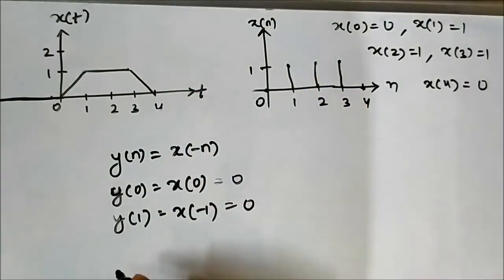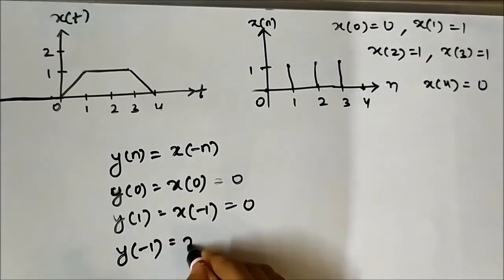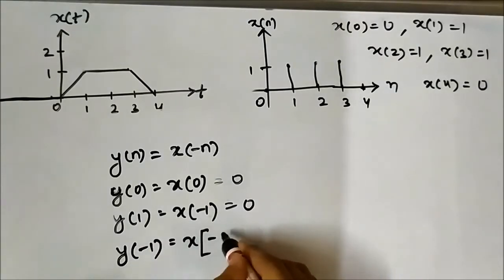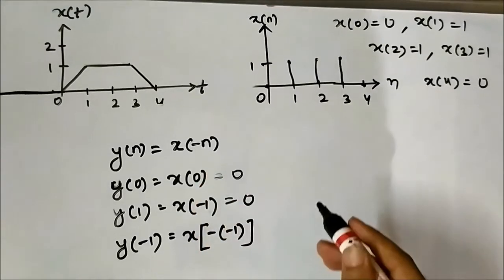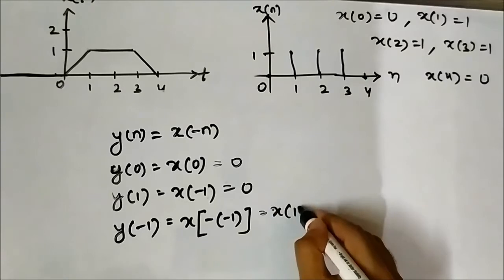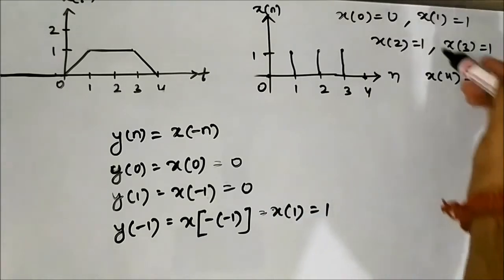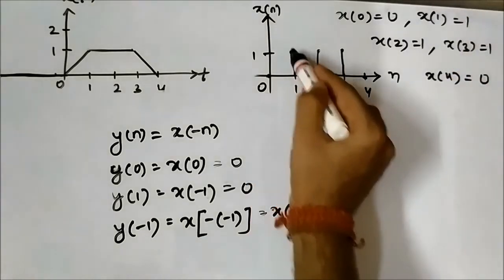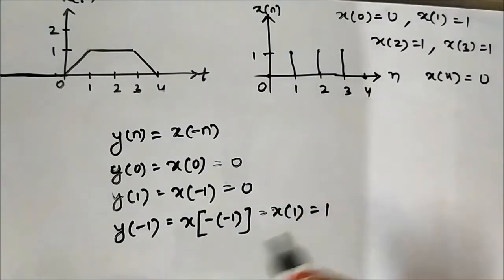Now let us go in the negative direction. y[-1] will be x[-(-1)], because it is x[-n]. So it will be x[1], which is equal to 1. Here x[1] is equal to 1, so y[-1] is equal to 1.